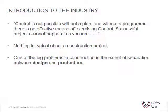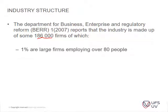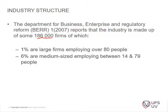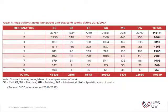Looking at industry structure, the Department of Business Enterprise and Regulatory Reform in 2007 reported the construction industry was made up of some 186,000 firms. In chapter one of Cook and Williams this is old data but still informative. It found that 1% of firms were large, employing over 80 people, 6% were medium-sized employing between 14 and 79 people, and 93% were small firms employing less than 14 people — very similar to South Africa.